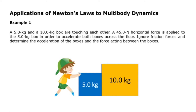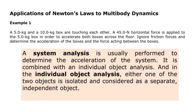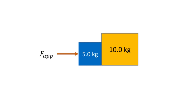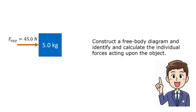Since we are looking for the acceleration, we will solve this problem using a system analysis. A system analysis is usually performed to determine the acceleration of the system. It is combined with an individual object analysis, in which either one of the two objects is isolated and considered as a separate independent object. To start drawing our free body diagram, let us replace the child with an arrow representing the applied force. To analyze the objects individually, we need to separate the boxes' forces and choose which object to analyze first — I chose the smaller box first.